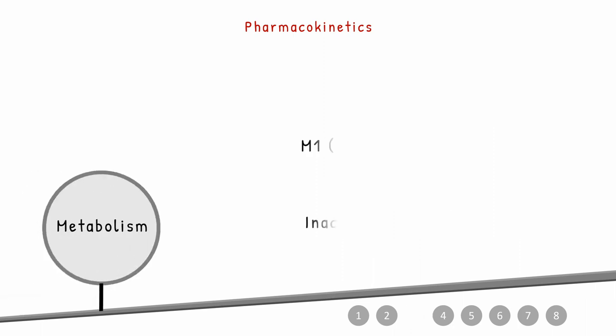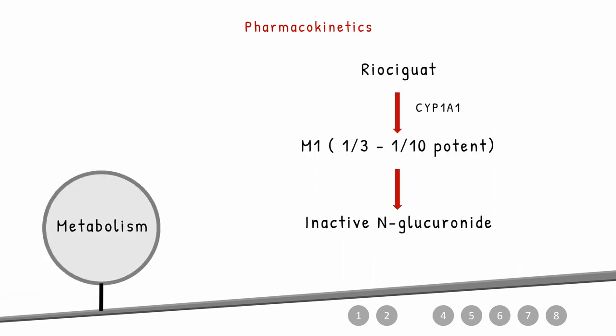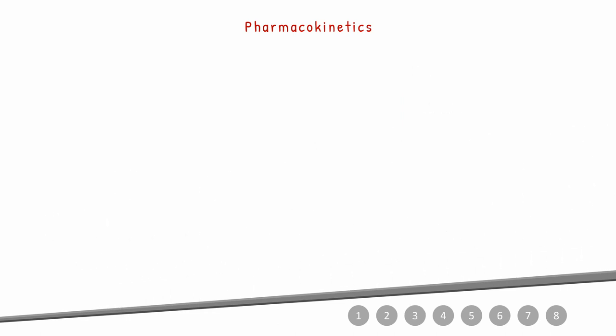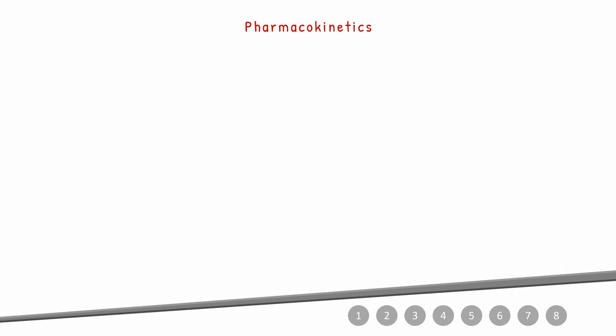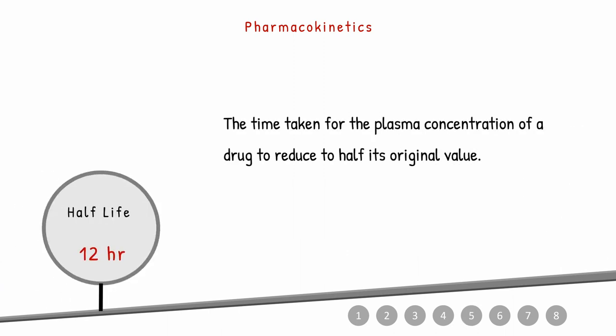For metabolism, Riociguat is metabolized via the CYP1A1 enzyme to the active metabolite M1, which is one-third to one-tenth as potent as the parent drug, and M1 is further metabolized to the inactive N-glucuronide. Bioavailability — the degree and rate at which the drug is absorbed into the bloodstream — is 94%. The half-life, the time for plasma concentration to reduce by half, is 12 hours.